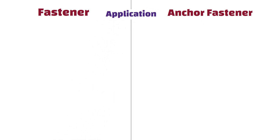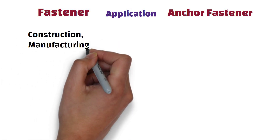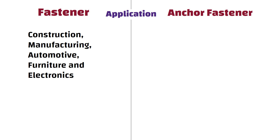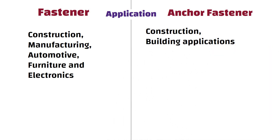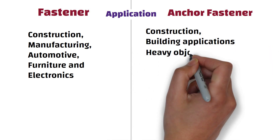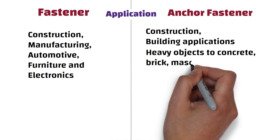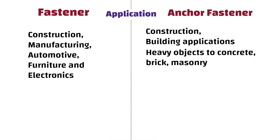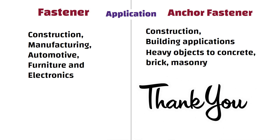Application: Fasteners are commonly used in various industries and applications such as construction, manufacturing, automotive, furniture and electronics. On the other hand, anchor fasteners are primarily used in construction and building applications. They are employed when attaching heavy objects to concrete, brick, masonry or other similar materials. So friends, see you in the next video. Thanks for watching.